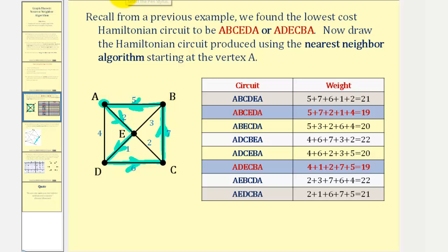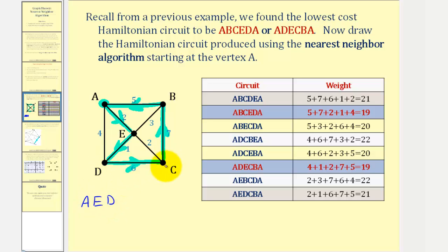From D, we don't have a choice. We have to go to C. From C, we don't have a choice. We have to go to B. And to complete our circuit, we now return to A. So the Hamiltonian circuit, using the nearest neighbor algorithm, is A, E, D, C, B, A.